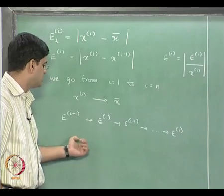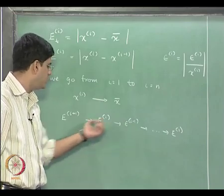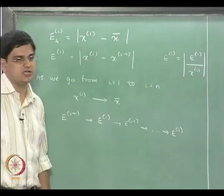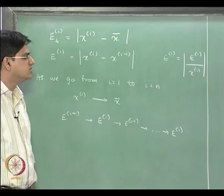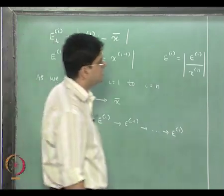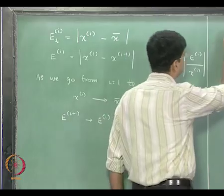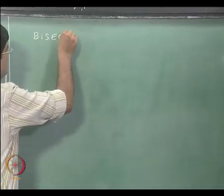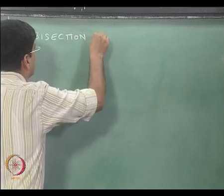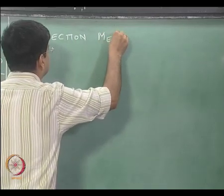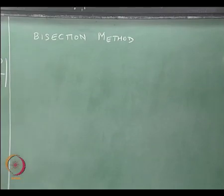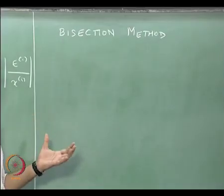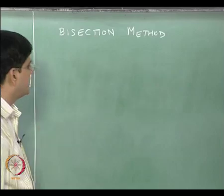For all these methods, we are going to look at how e_(i+1) depends on e_i — that is essentially what we are interested in doing. Let us take the bisection method example. We are taking the bisection method first simply because it is the easiest of the methods for us to analyze.